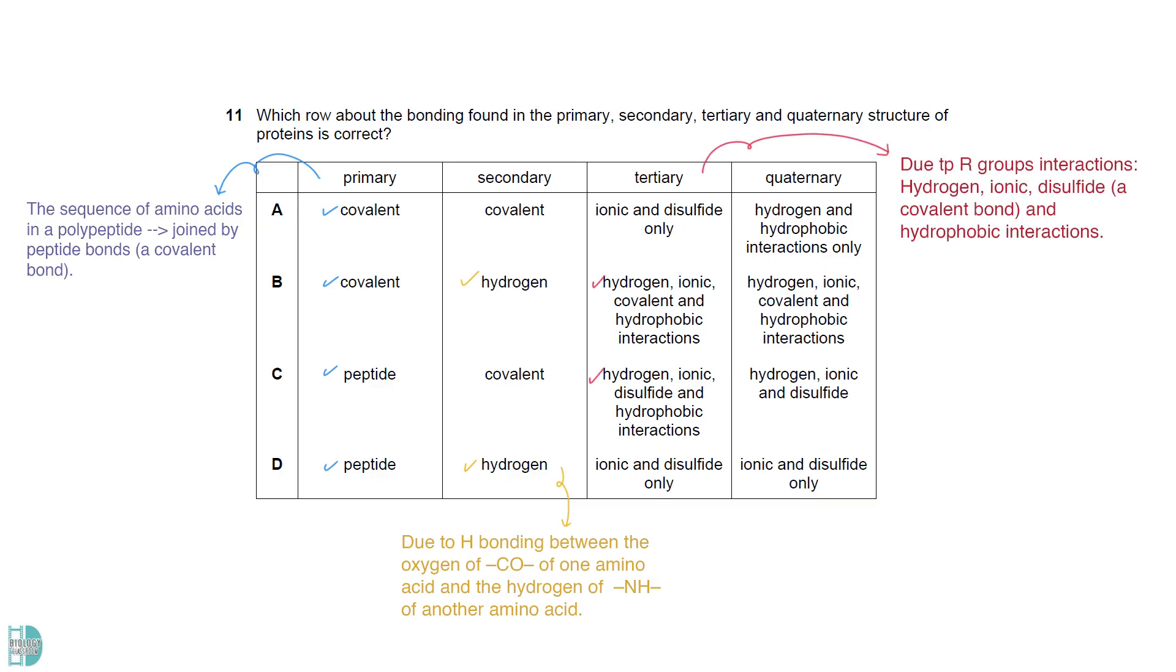There are four types of bonds involved in the tertiary structure: hydrogen, ionic, disulfide, which is a covalent bond, and hydrophobic interactions. The association of polypeptides to form the quaternary structure can be due to the four types of bonds as well.